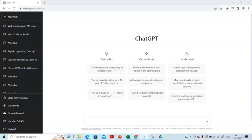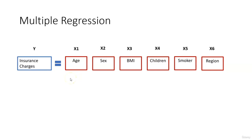In this video, I am going to show how to build a machine learning model for an insurance scenario using six factors — age, sex, BMI, and others — to predict insurance charges. Let's copy the dataset, paste it into ChatGPT, and ask it to do some basic analysis and build a machine learning model. The relevant algorithm for this scenario is multiple linear regression.